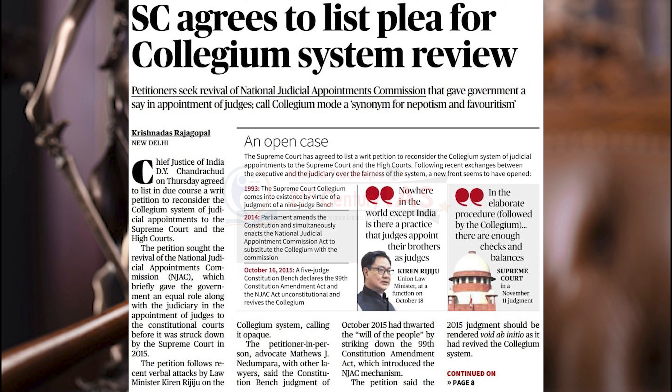However, the government aimed to change this mechanism with the 99th Amendment. They brought the NJAC, but this was struck down by the Supreme Court in 2015, infamously called the Fourth Judges Case. The main reason for striking down the 99th Amendment was that it violates the independence of the judiciary, which comes under the basic structure doctrine under the Kesavananda Bharati judgment. Today we have another article about the Supreme Court listing a plea for collegium system review. Let us wait and watch for the next developments.